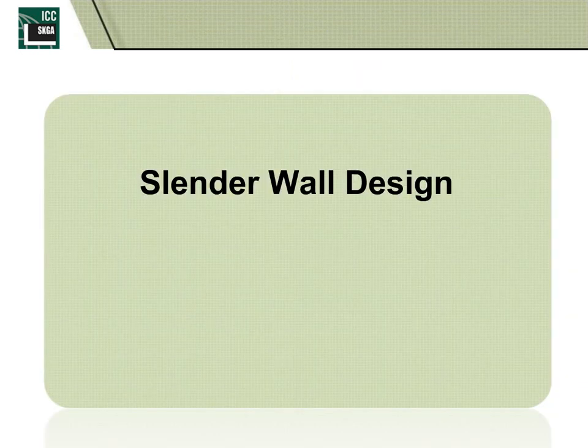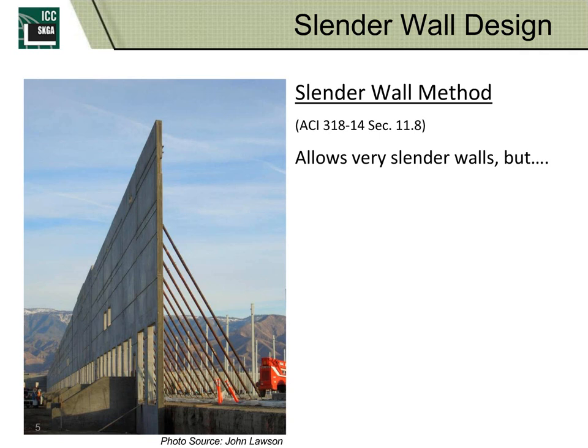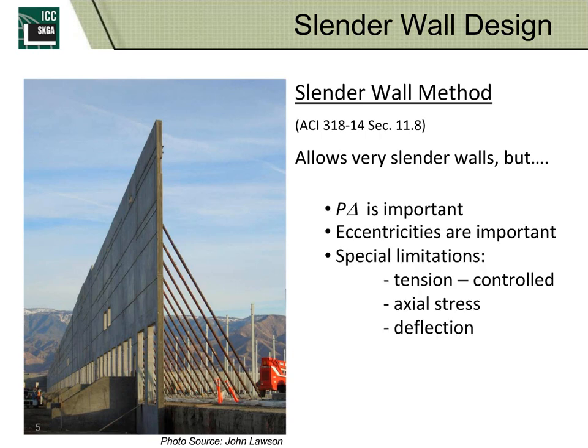Starting with slender wall design, we're looking at the slender wall method of ACI 318. In the current 2014 edition, it's placed in section 11.8, which allows very slender walls. Unlike other compression members, these walls have a very thin cross section. Key challenges include large deflections that create secondary moments, so P-delta effects are required to be addressed.